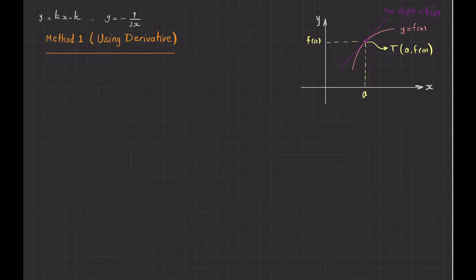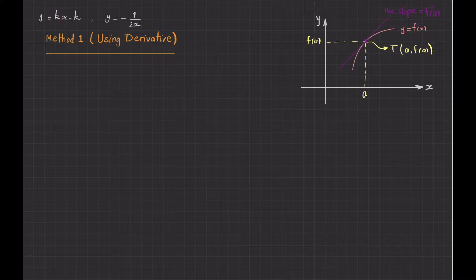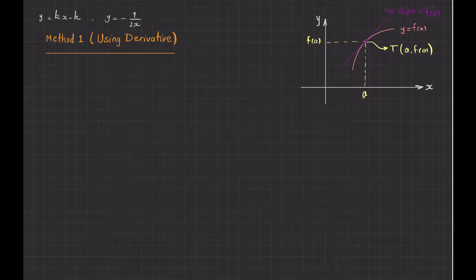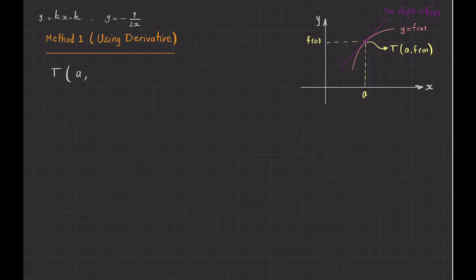We have the curve equation, and we somehow know the equation of the tangent line — I say somehow because k is still missing. But we know that when I take the derivative of this function and plug in the x-coordinate of the point of tangency, that will equal k, since k is the slope of this line. I can pretend that I know the point of tangency: let T have x-coordinate a, and y-coordinate f(a), which is minus 1 over 2a.